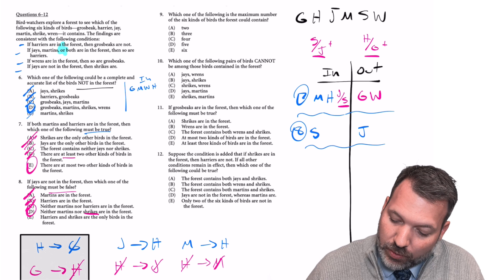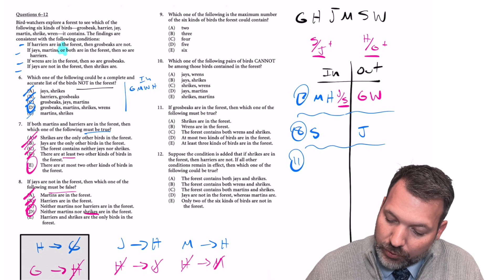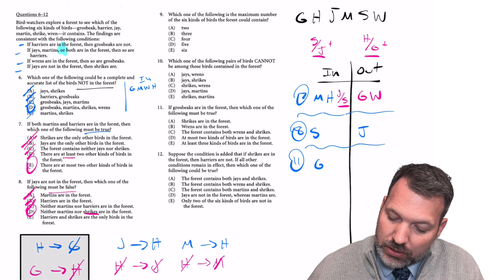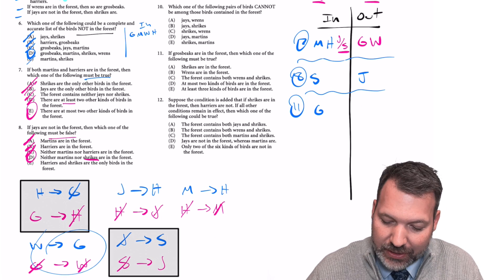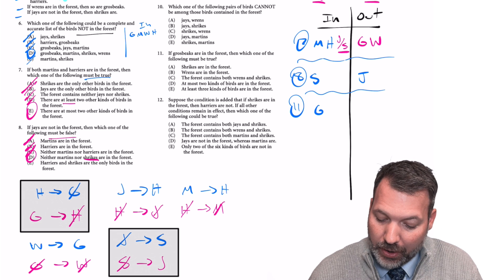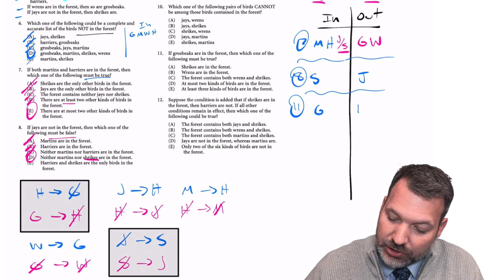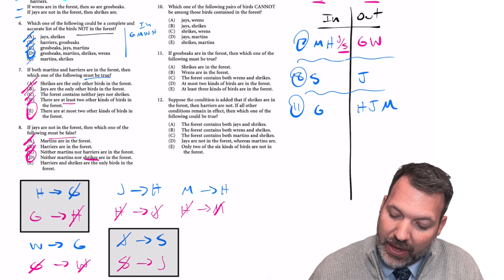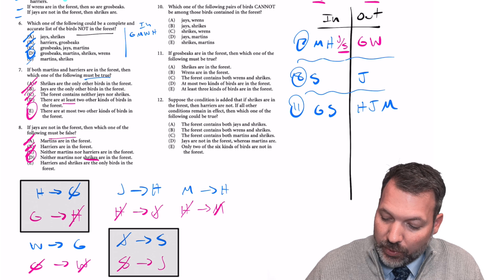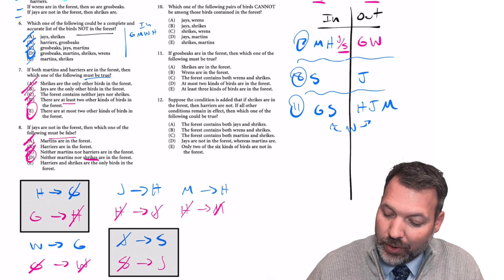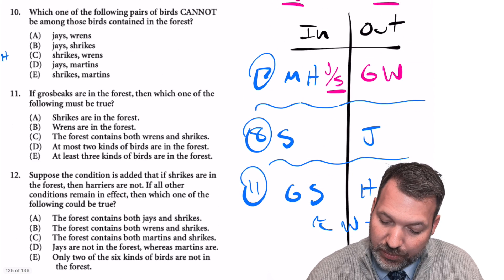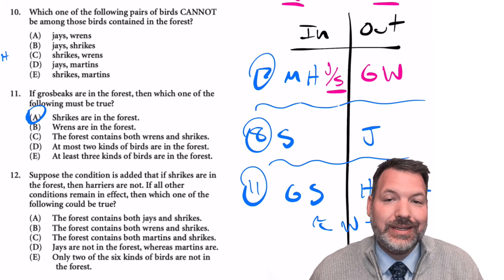Number 11: if Grosbeaks are in, which one of the following must be true? If G is in, H is out. When H is out, both J and M also have to be out. And when J is out, S is in. The only element we don't know about is Wrens — they could be either in or out. So as for what must be true, Shrikes are in the forest — yes. Number 11 is A.